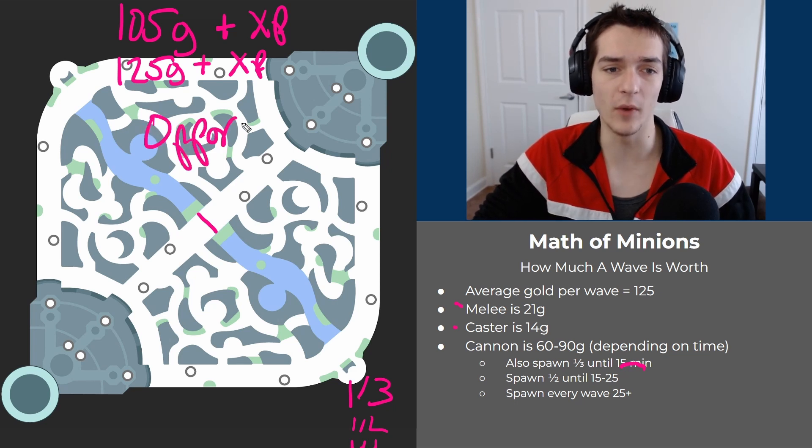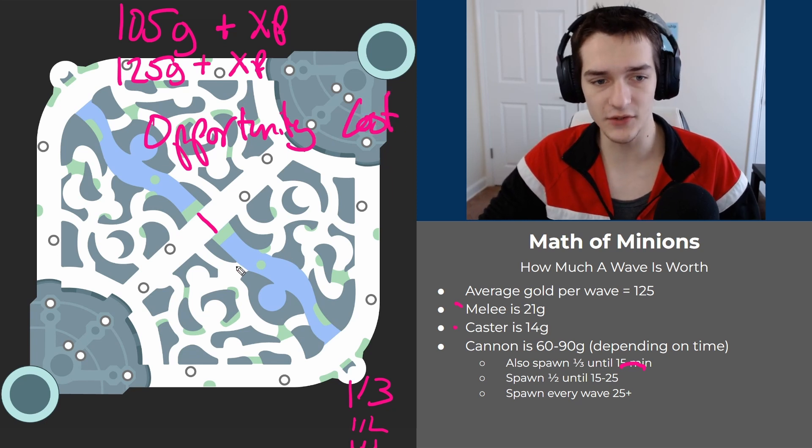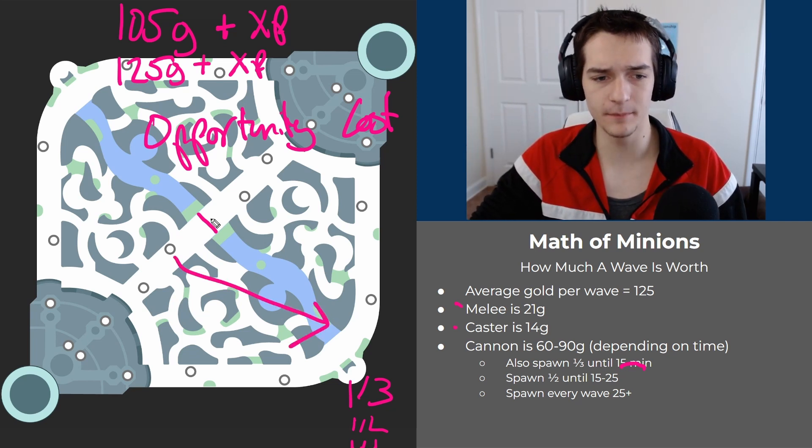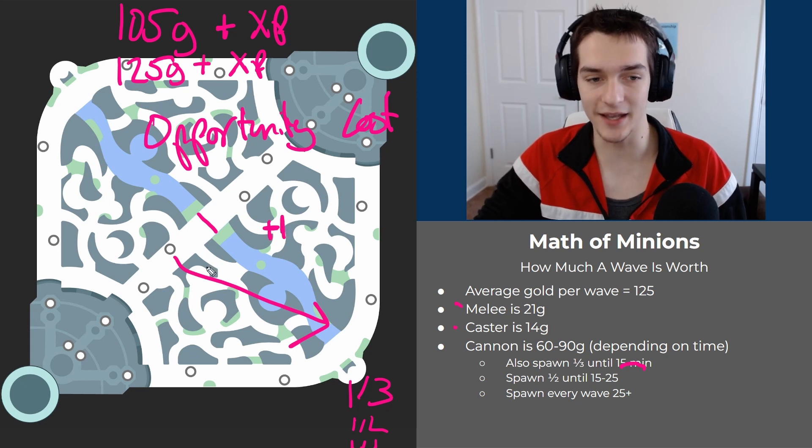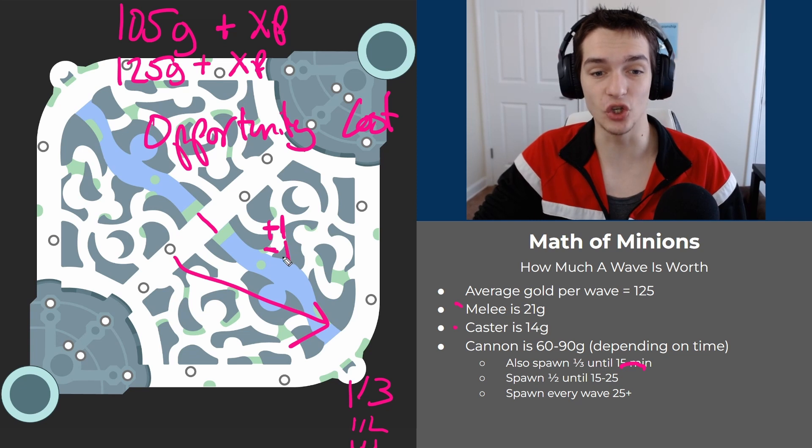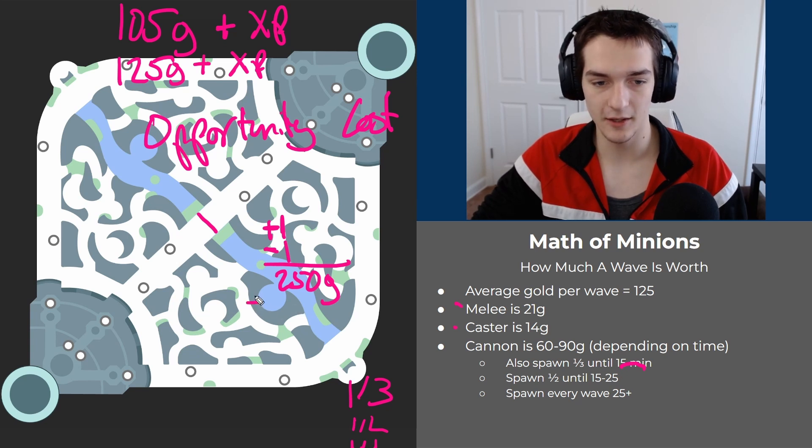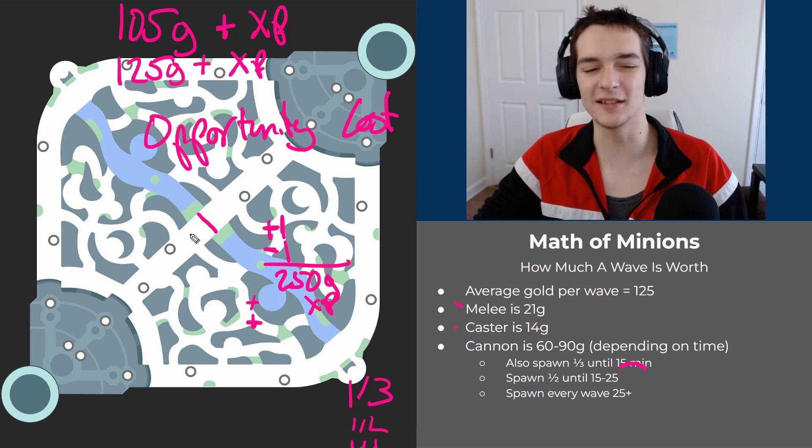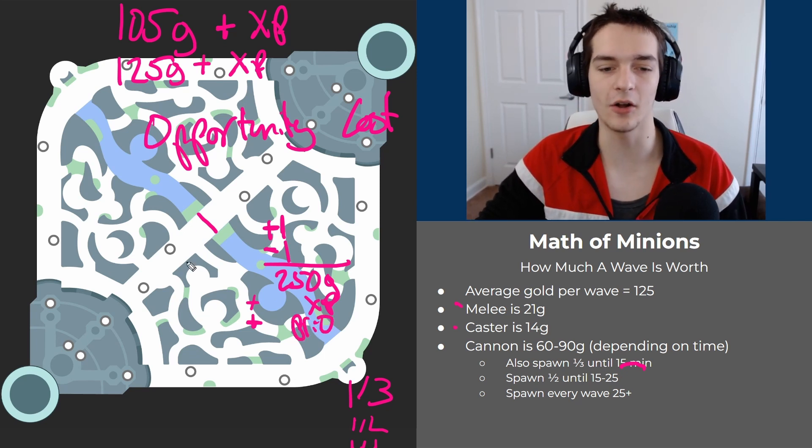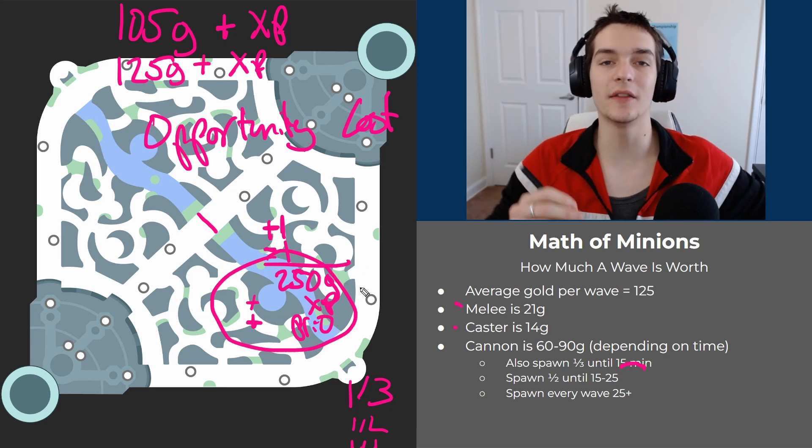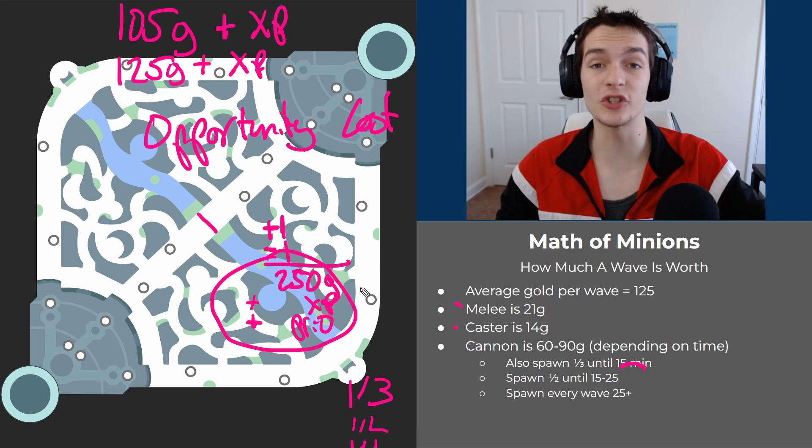Let's say there's a normal minion wave here, 125 gold on average. If you leave to go bottom for a dragon or something, they get the minion wave and you lose the chance at getting it. It's a two minion wave swing - 125 twice which is 250 gold plus a very significant amount of XP, plus the things that are harder to measure like priority and tower plating. This is the opportunity cost of leaving. The second you decide to go bottom and leave that minion wave, you lose this stuff immediately.